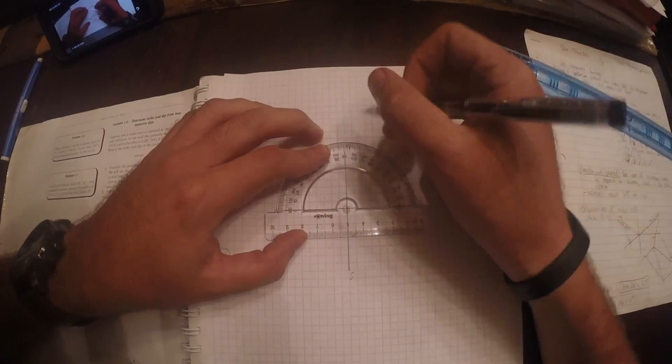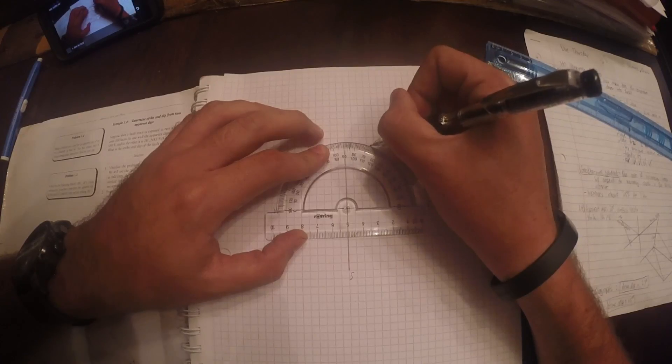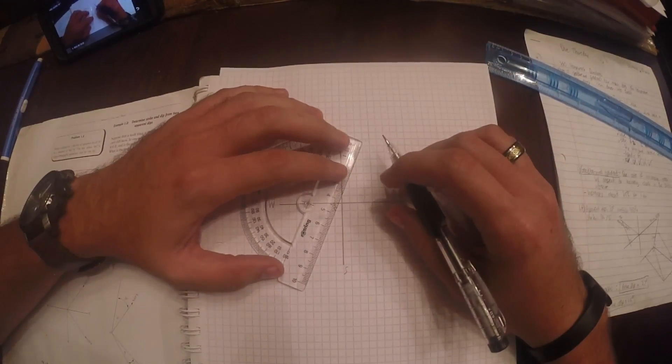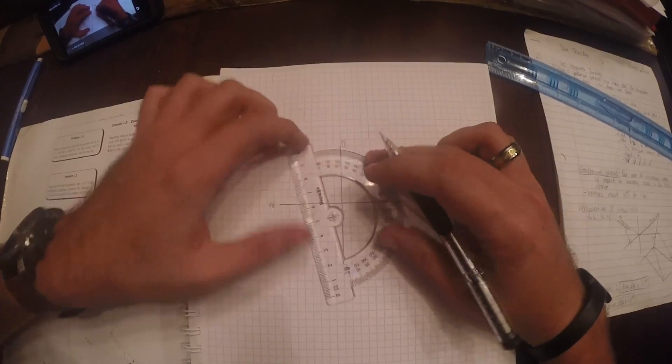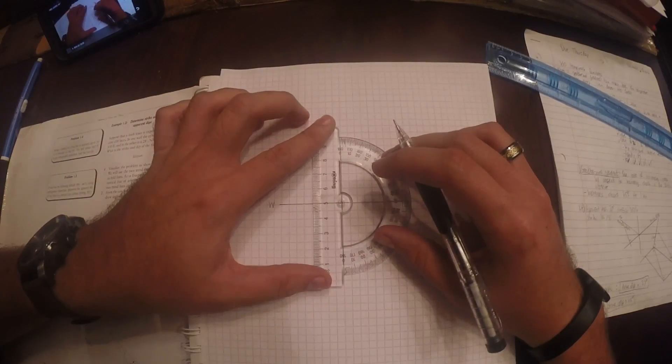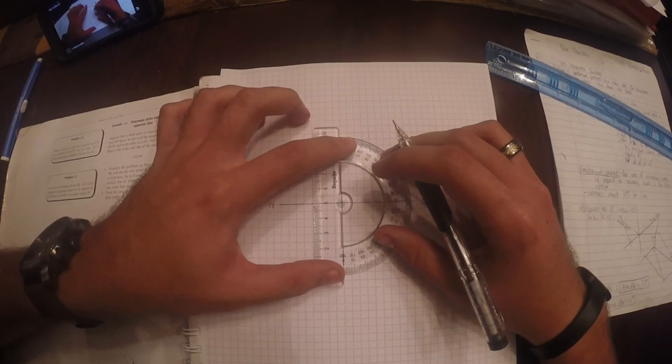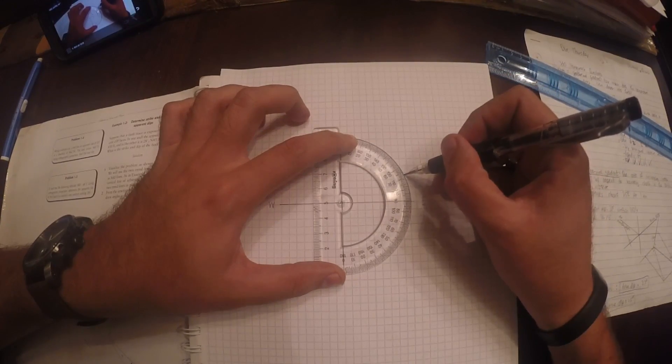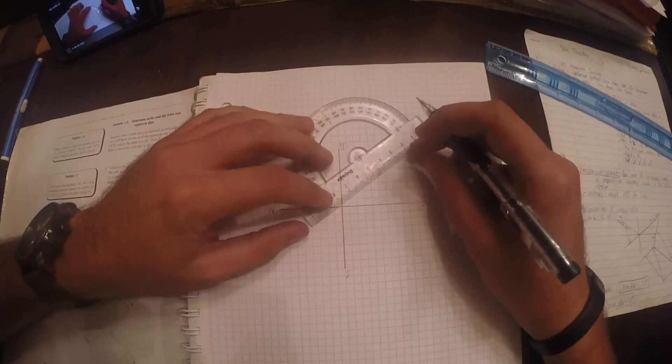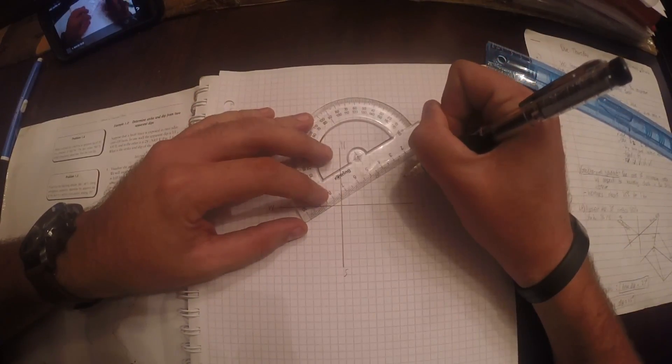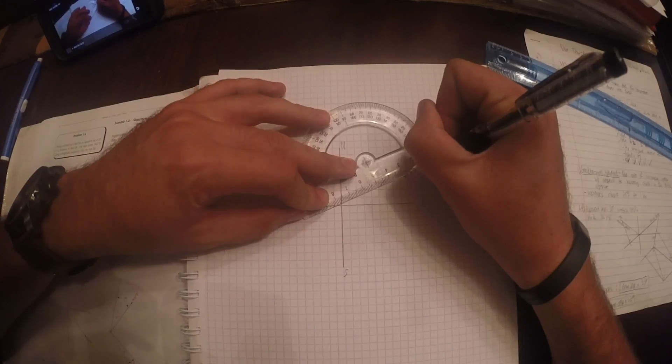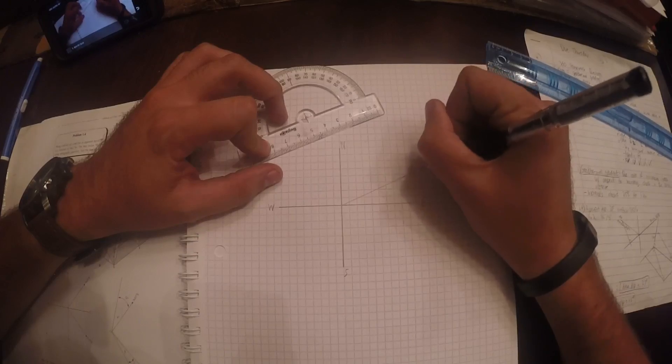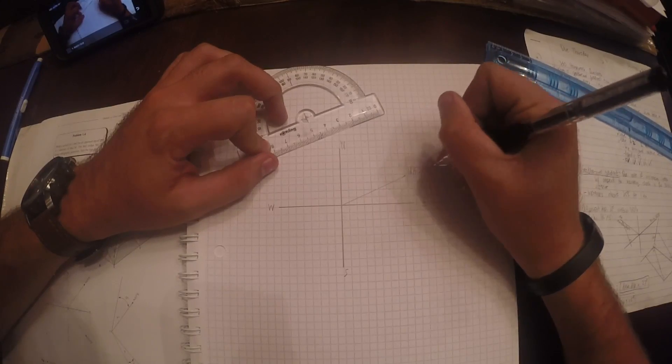So, first step is to do the strike, which is the north 67 east. So, 67 is about, alright, 67. Okay, whoops, wrong one. Ignore that one. 65, 6, 7, there, okay. It's from the origin to that point. So, that's north 67 degrees east.